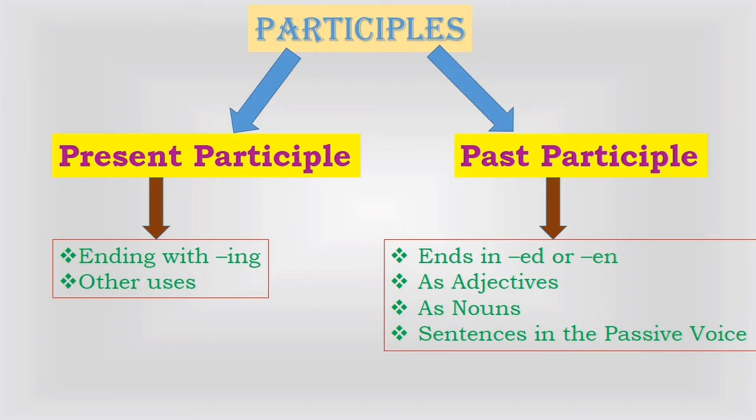Participles: There are two participle forms in English — the past participle and the present participle. The present participle ends in '-ing'. It is used with forms of 'be' — like am, are, is, was, will be — to form the continuous tenses of verbs. For example: I am singing, you are listening, they will be traveling.